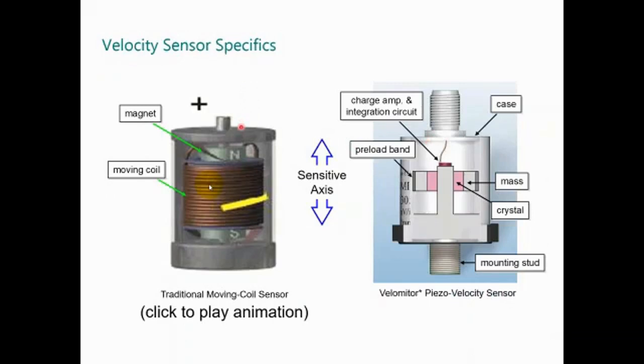The velocity. There are two different designs. The moving coil - you have a magnet and you have a coil. The coil is mounted on springs. When the machine vibrates, there's relative motion between the magnet and the moving coil, and it induces electromagnetic force. The electromagnetic force is called voltage, and the voltage is proportional to the velocity of vibration.